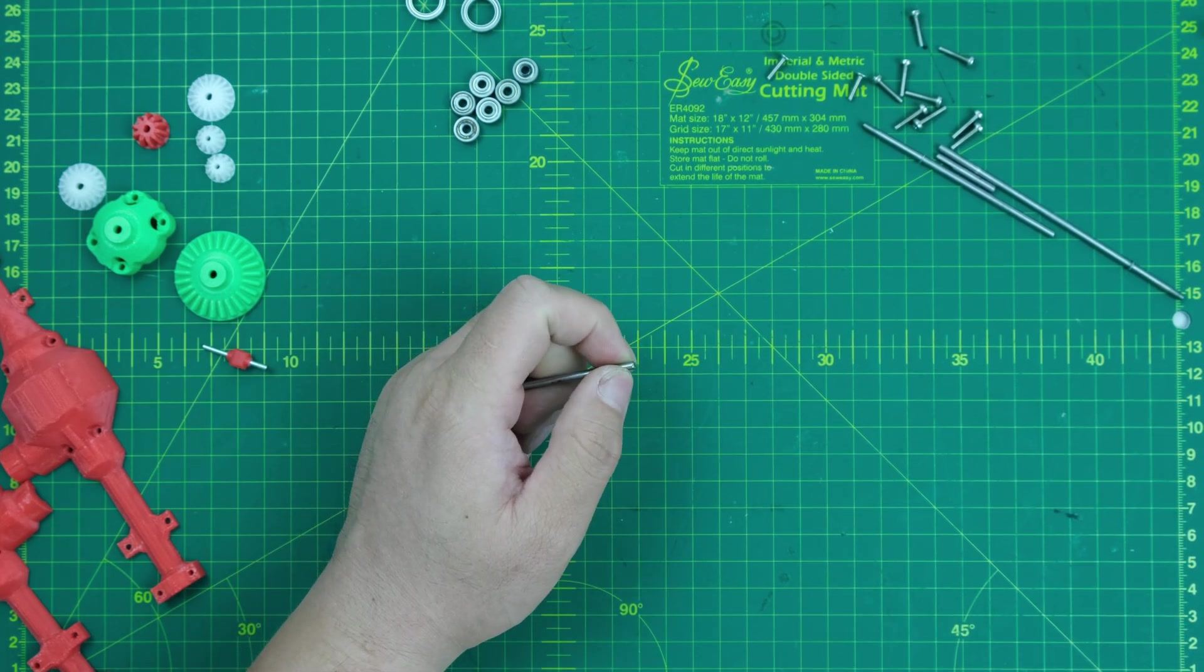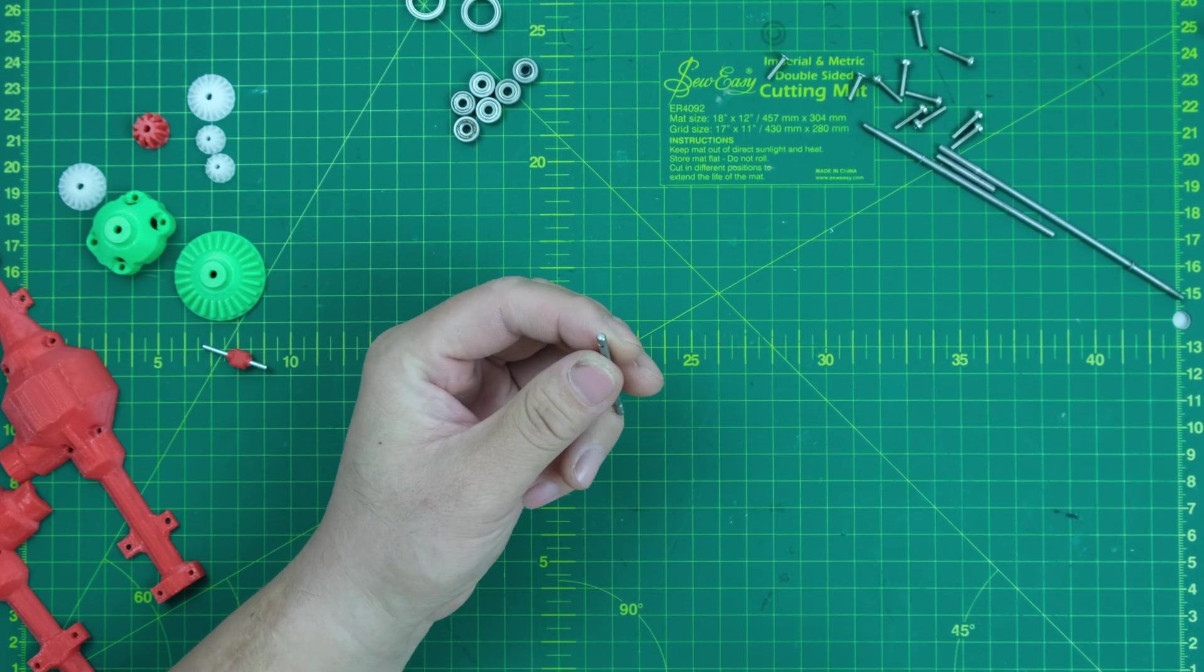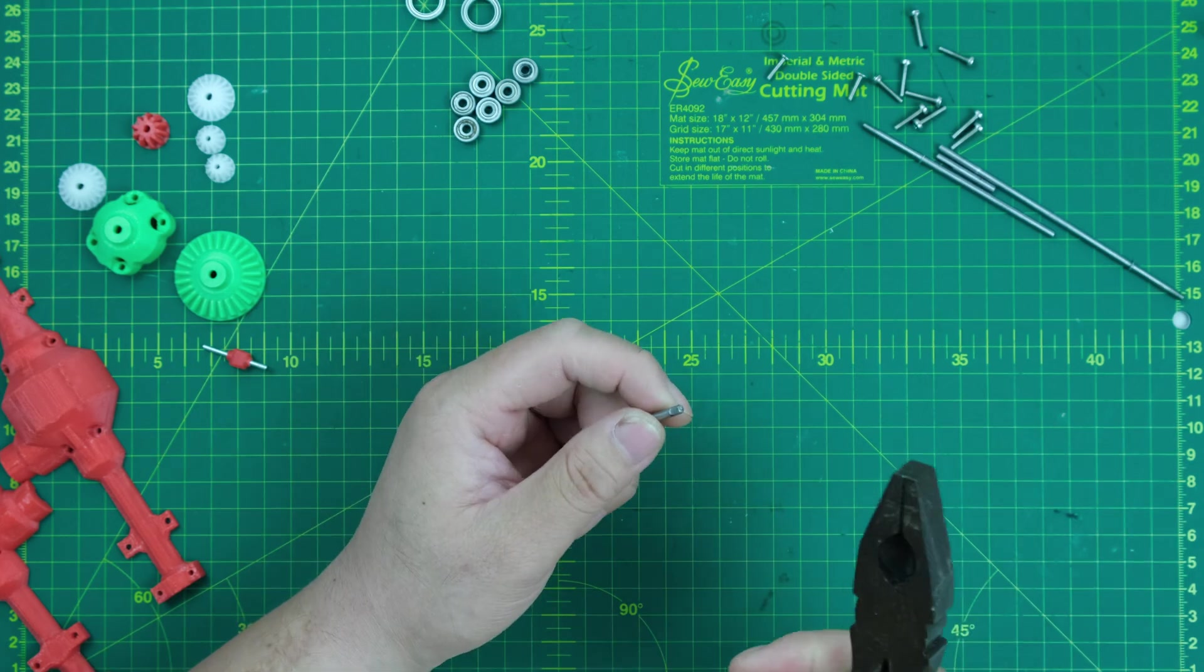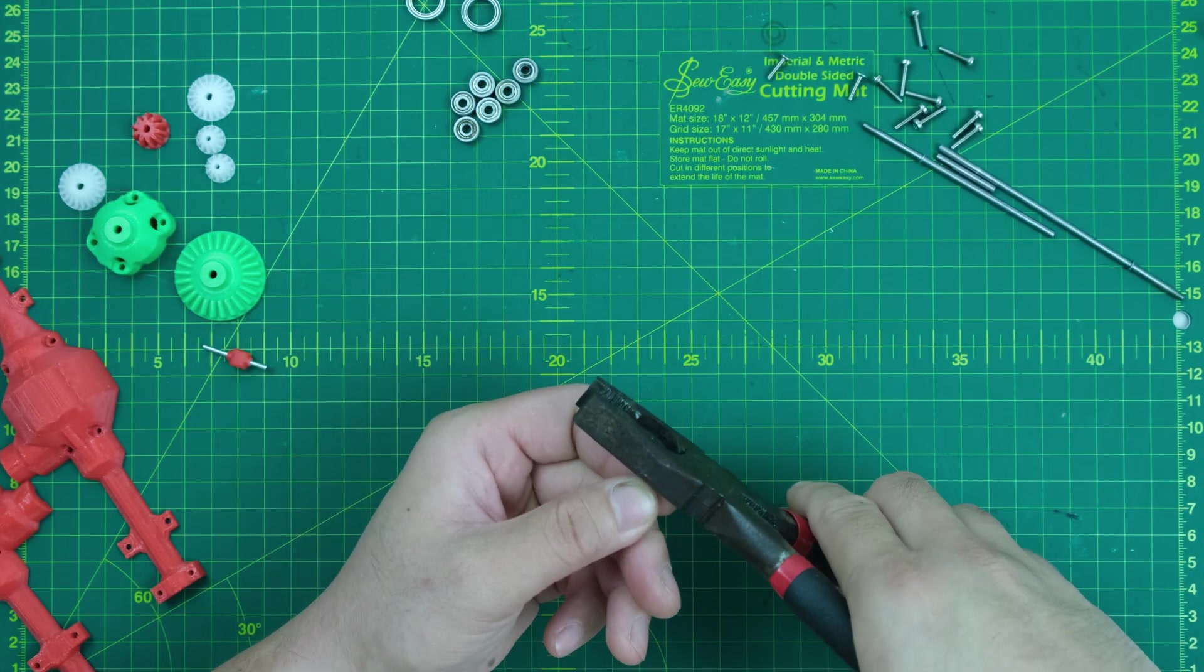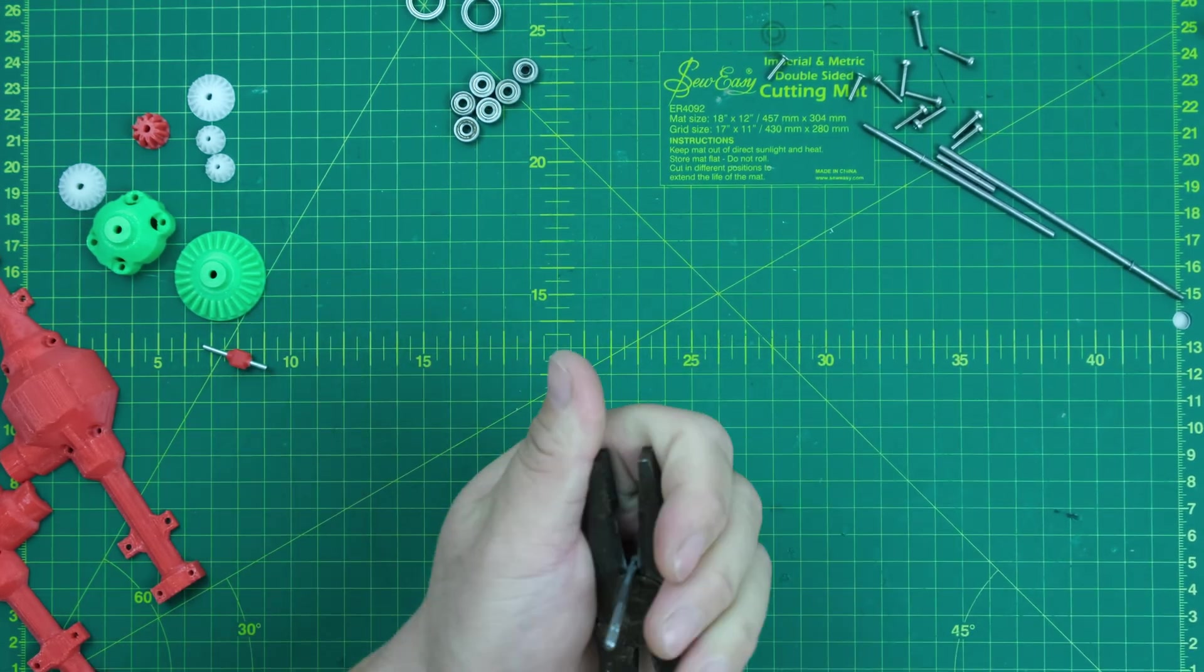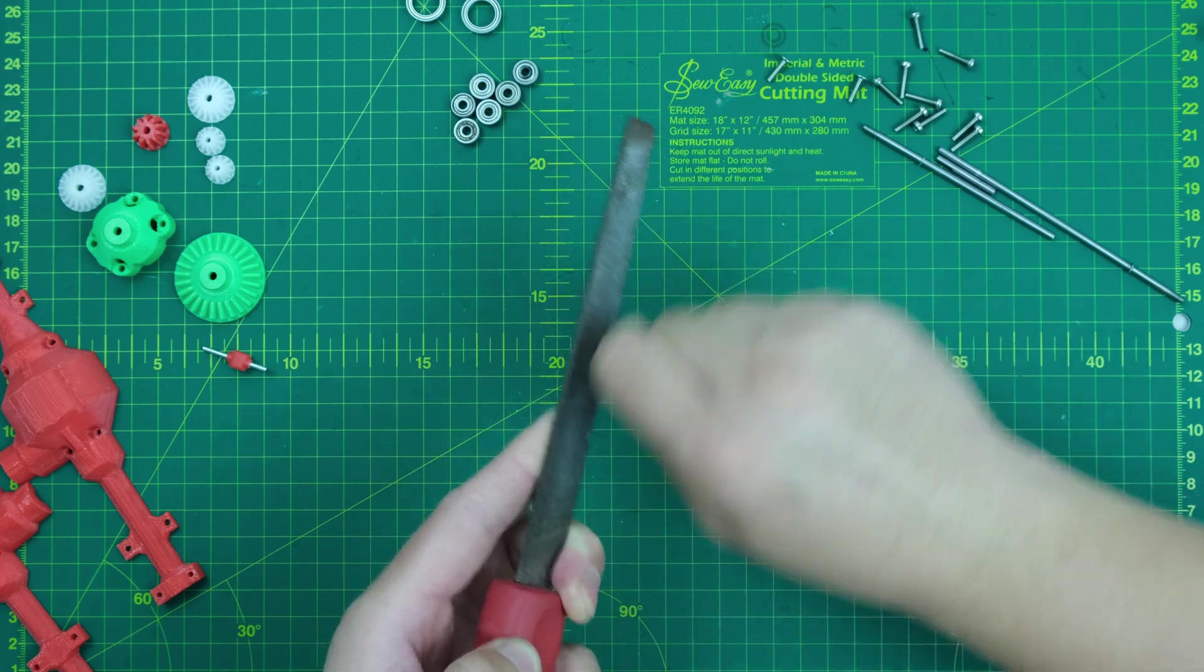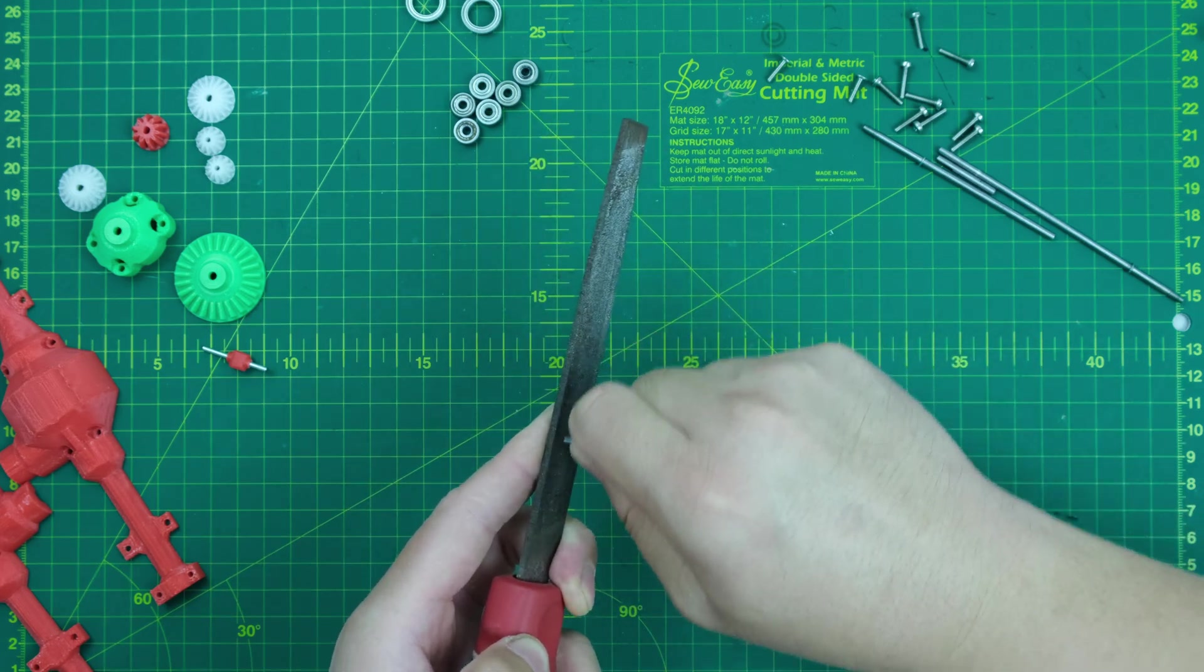This shaft is previously made but failed for some reasons. I'm gonna trim the tip off with a plier, then make the tip neat and flat. You need a file or a rotary tool, or any other ways to do so.